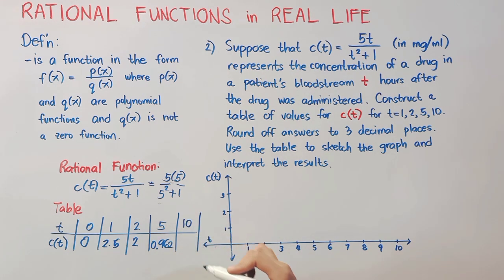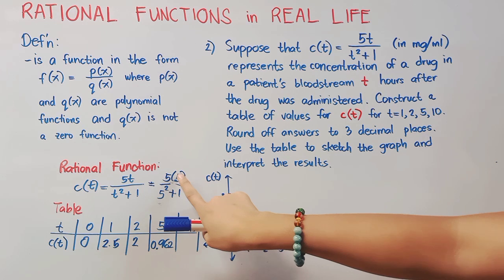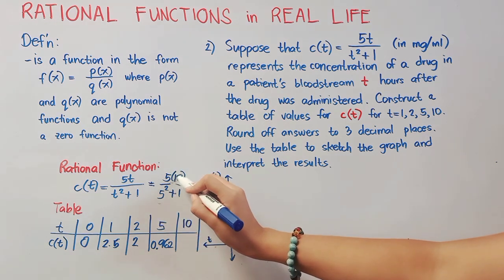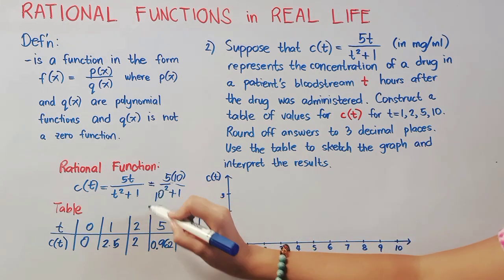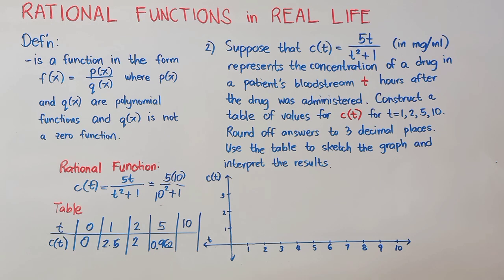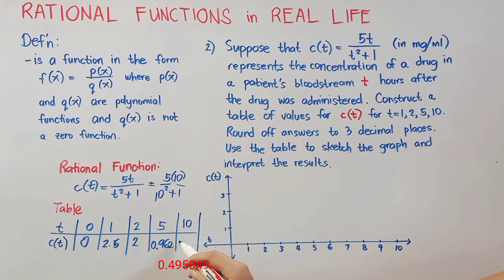Lastly, we have t equals 10. So, the same thing, we'll just replace the value of t with 10. So, our numerator is 5 times 10 equals 50 over 10 squared is 100 plus 1, 101. So, 50 divided by 101 is this 1. However, we have to get only 3 decimal places, so we have to round it off. Our final answer would be 0.49, and we will just copy 5 since the number to its right is 0.